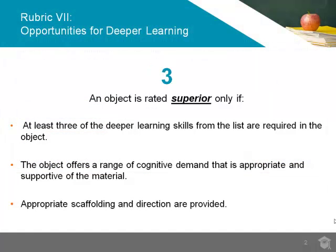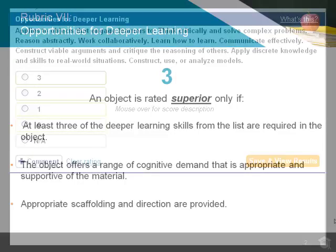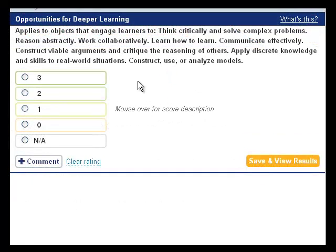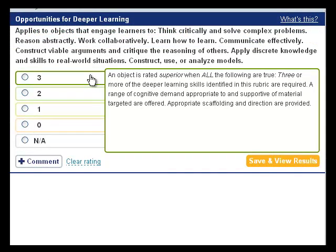An object should be rated superior, a 3 rating for this rubric, only if at least three of the deeper learning skills from the list identified in this rubric are required in the object. Also, a superior object should offer a range of cognitive demand that is appropriate and supportive of the material, and appropriate scaffolding and direction should be provided.